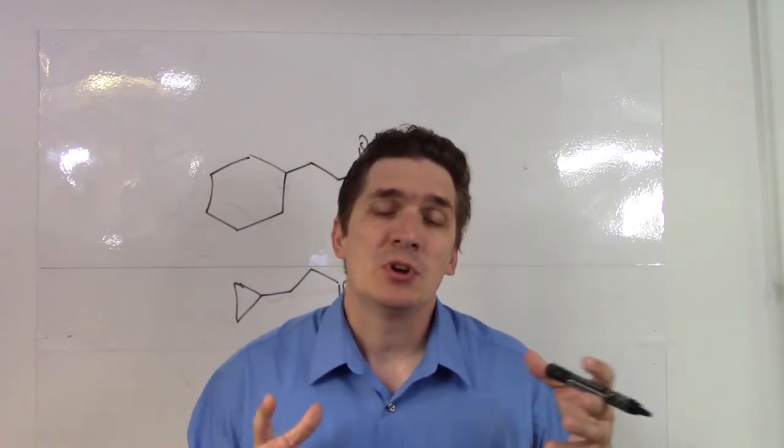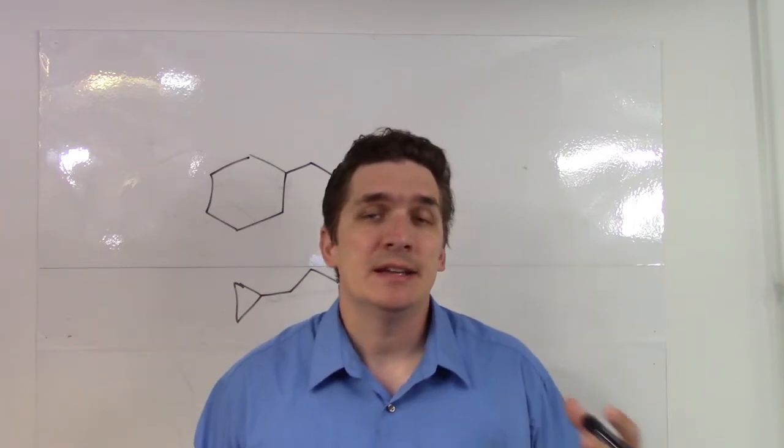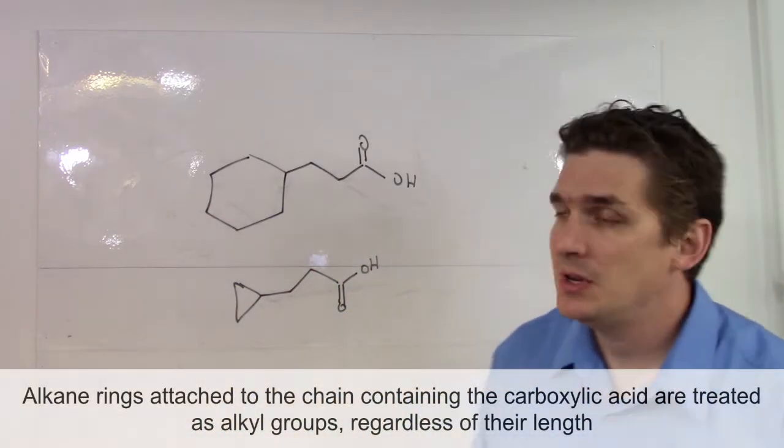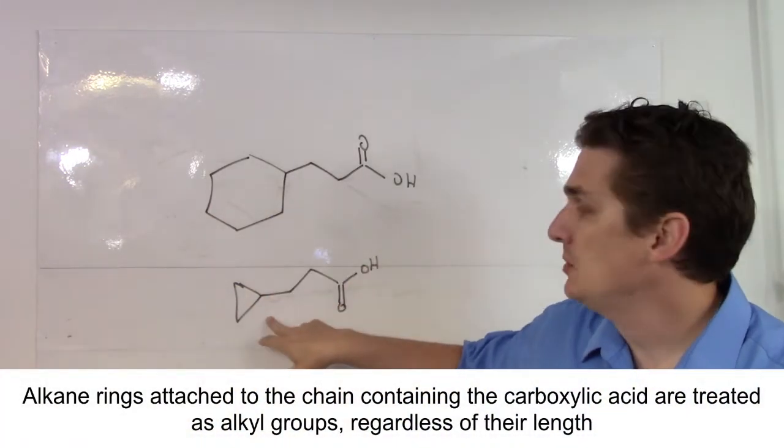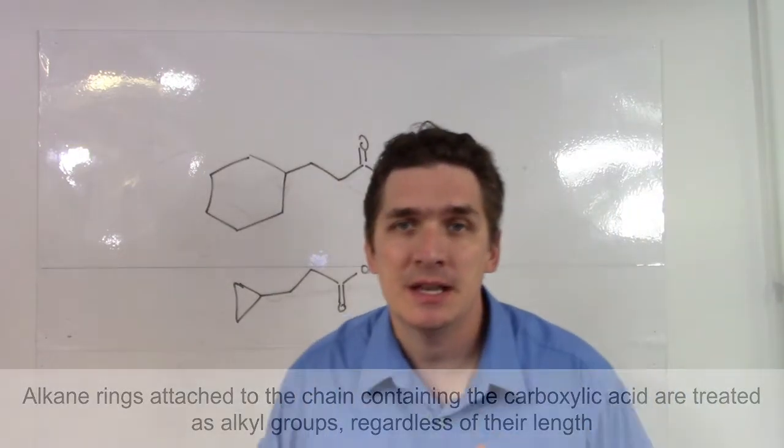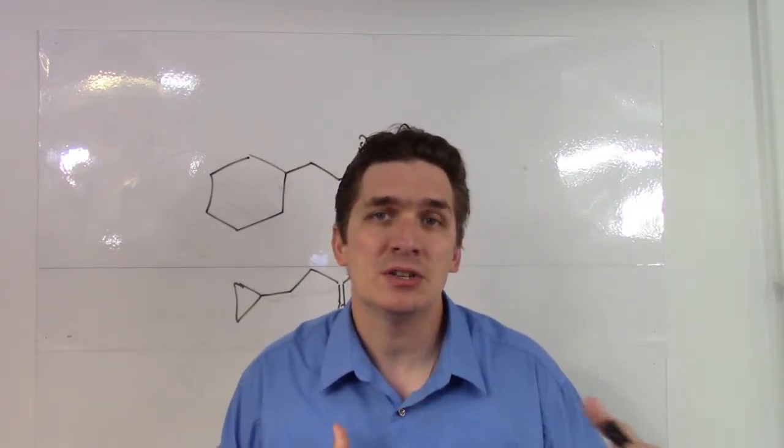However, with carboxylic acids, they trump any type of alkyl group. So regardless of whether we've got a six-member ring here or a three-member ring here, we are going to name these as if the rings are branches off of the parent chain.